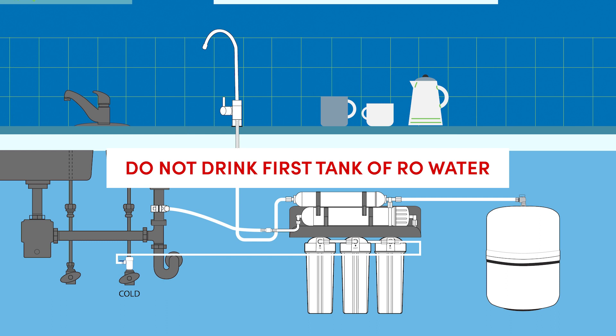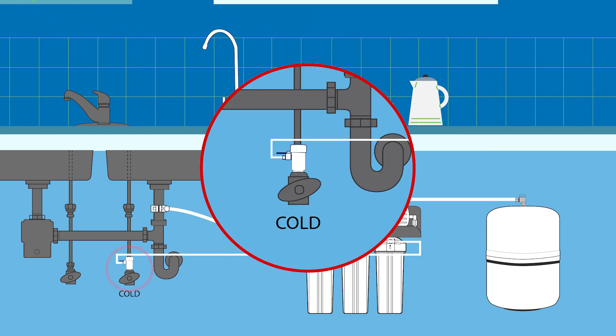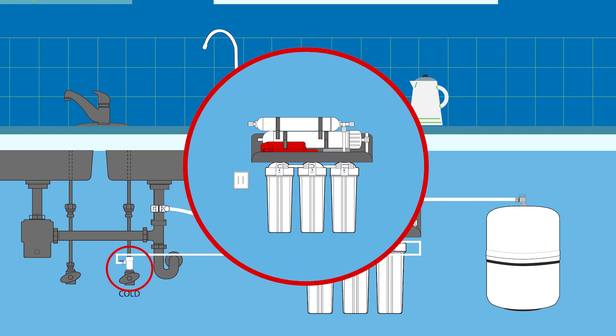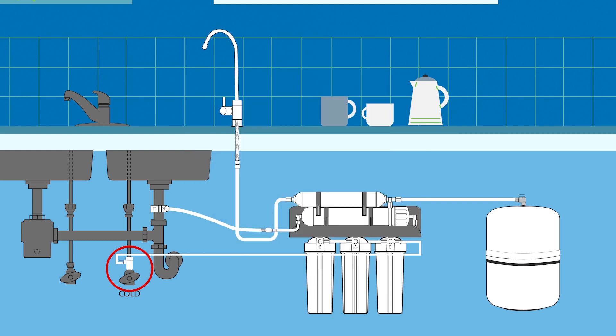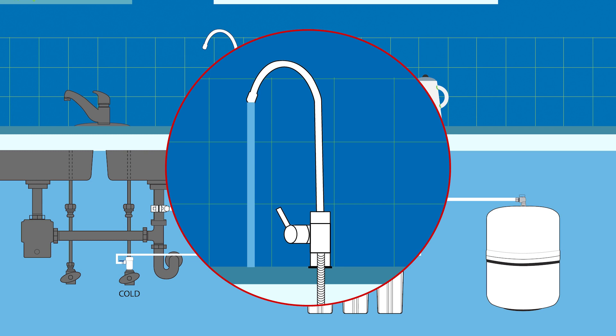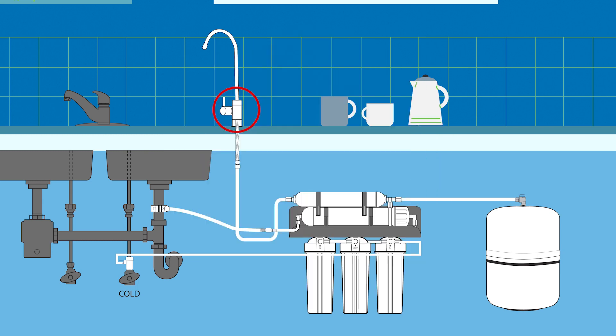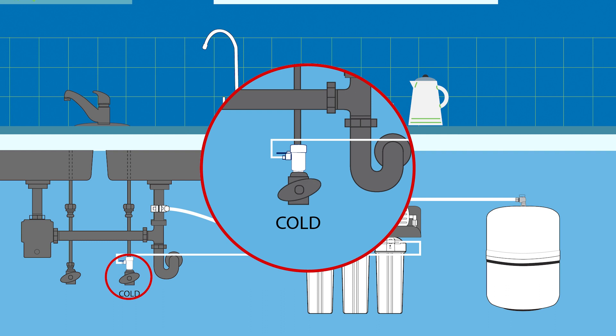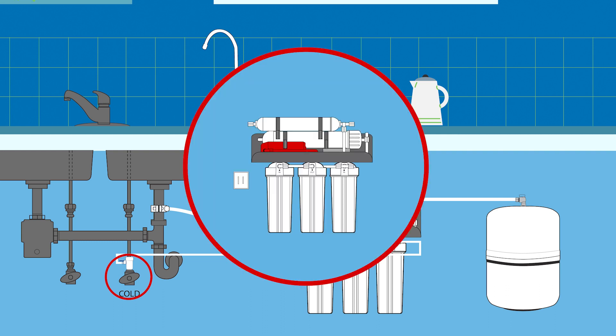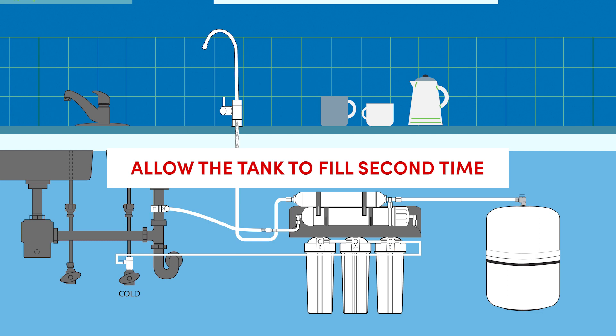Do not use or drink the first tank of RO water. Turn off the water supply valve. For systems with a pump, unplug the power supply. Empty the first tank of water by turning on the RO faucet and letting it run until the water stops flowing. Turn off the faucet, turn on the water supply valve. For systems with a pump, plug in the power supply. Allow the tank to fill a second time, approximately one to two hours.